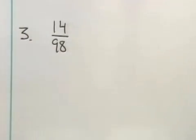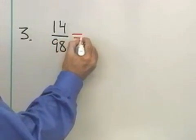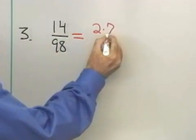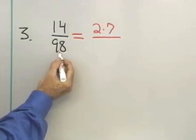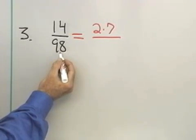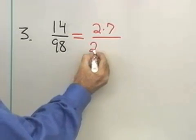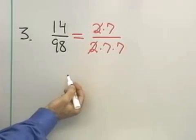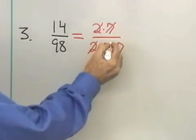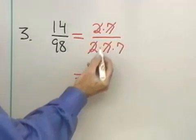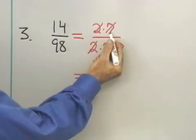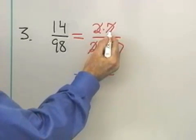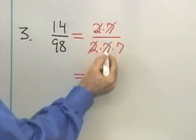For problem 3, we have 14 over 98. Now, 14, if I factor that into the product of primes, it will be 2 times 7. 98 is 2 times 49, and 49 is 7 times 7. So, 2 times 7 times 7. So, I divide out the 2's that are common to the numerator and denominator. Then, I divide out the 7 that's common to the numerator and denominator. When I divide this numerator by 2 and by 7, what's left is 1. 2 divides into 2 once. 7 divides into 7 once. 1 times 1 is 1.